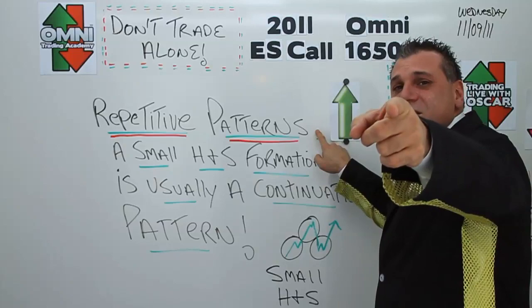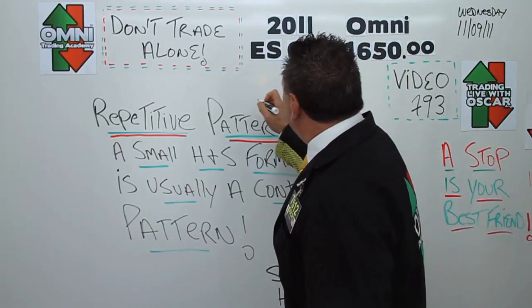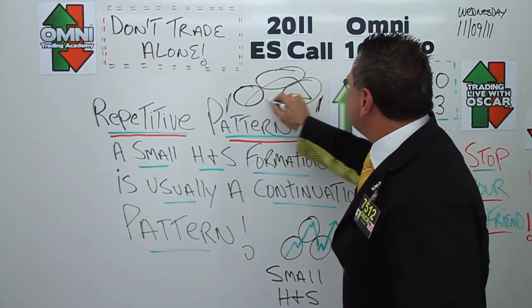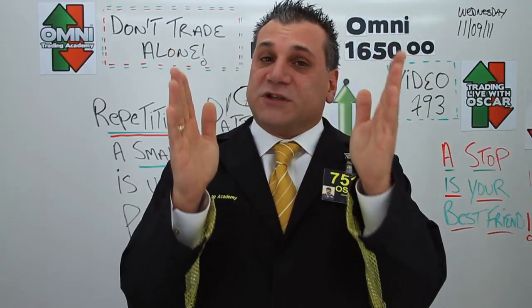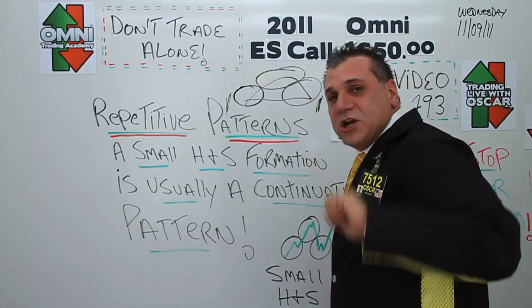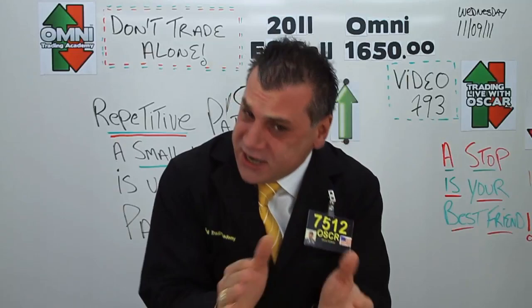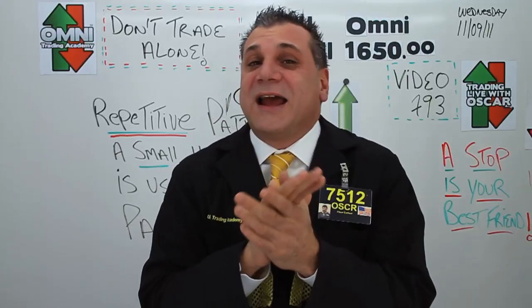Why would we expect that? Because we thought we saw a small head and shoulders formation, which is a repetitive pattern. A small head and shoulders is usually a continuation pattern — that's different from a big broad head and shoulders that takes months to create, starting in July and completing in October. We're looking at a small one. I told you Sunday evening: we're going to go down Monday, and then the head and shoulders should take over and move us higher. And lo and behold, Monday we went down, Tuesday we came bouncing right back up.